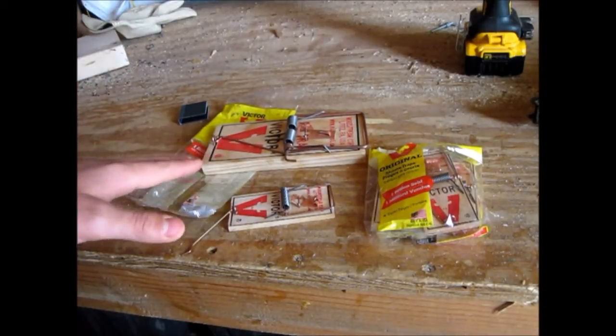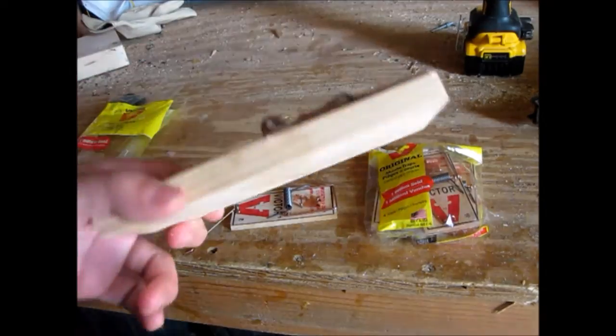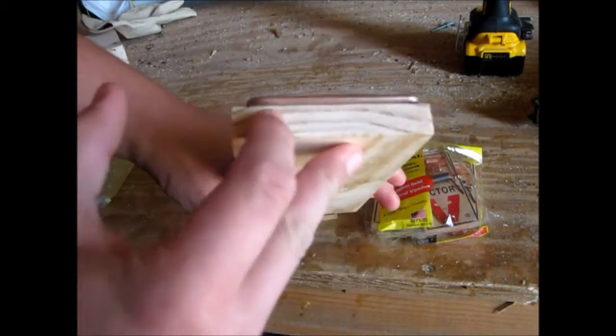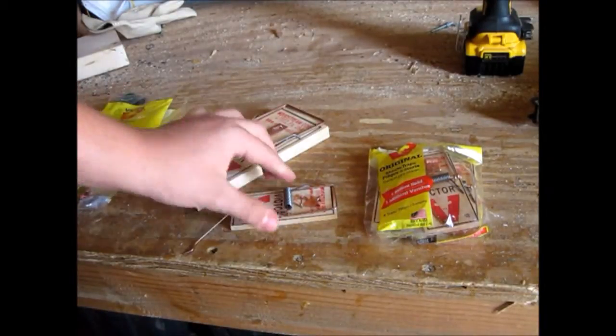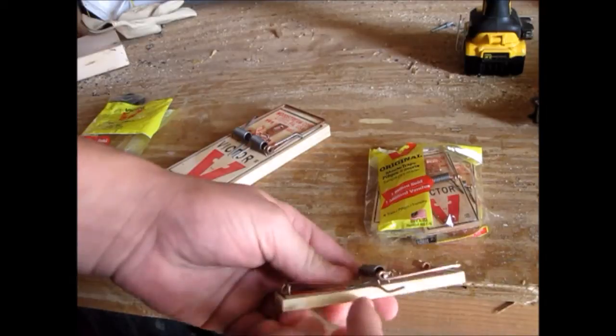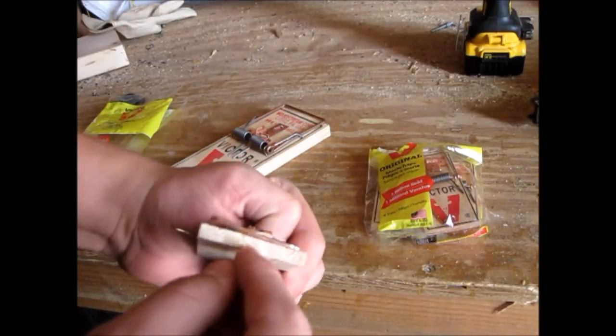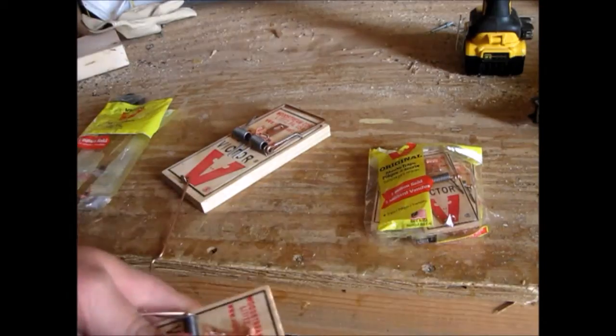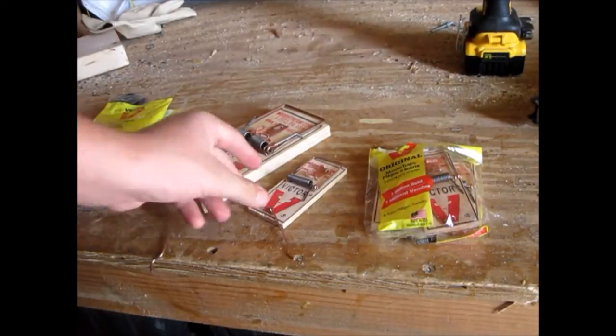First I want to talk about the size comparison. Here's a rat trap, about 7 and a half inches long, width is about 3 inches, and here's a mouse trap. It's about 3 inches long and an inch and a half. You can see there are two completely different sizes.